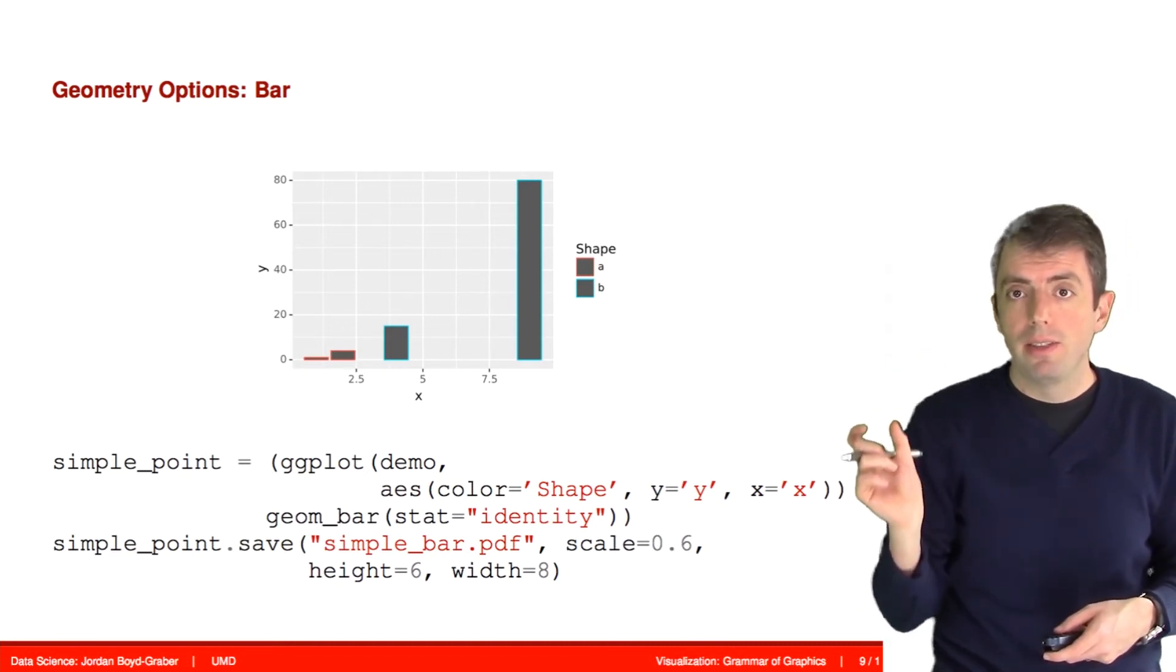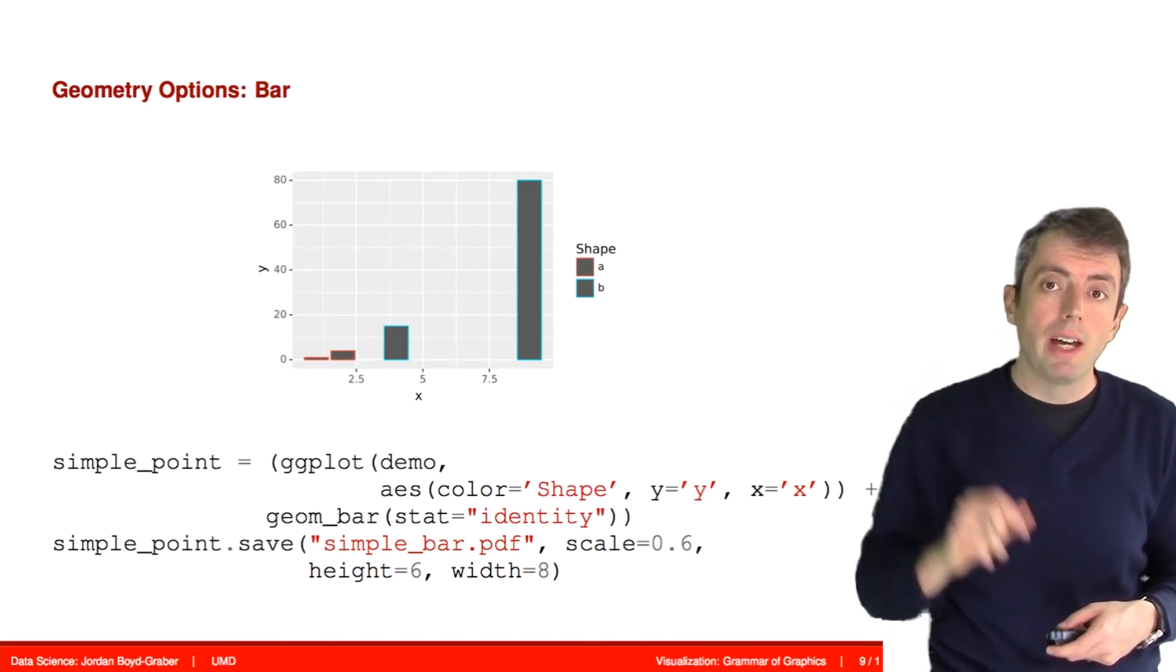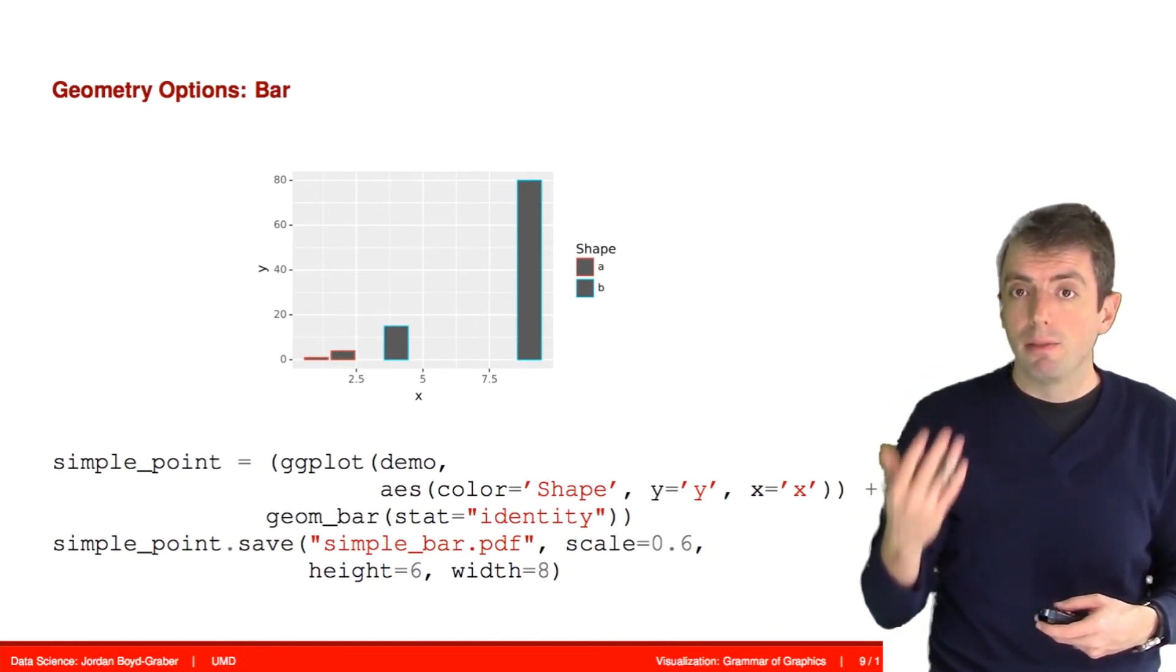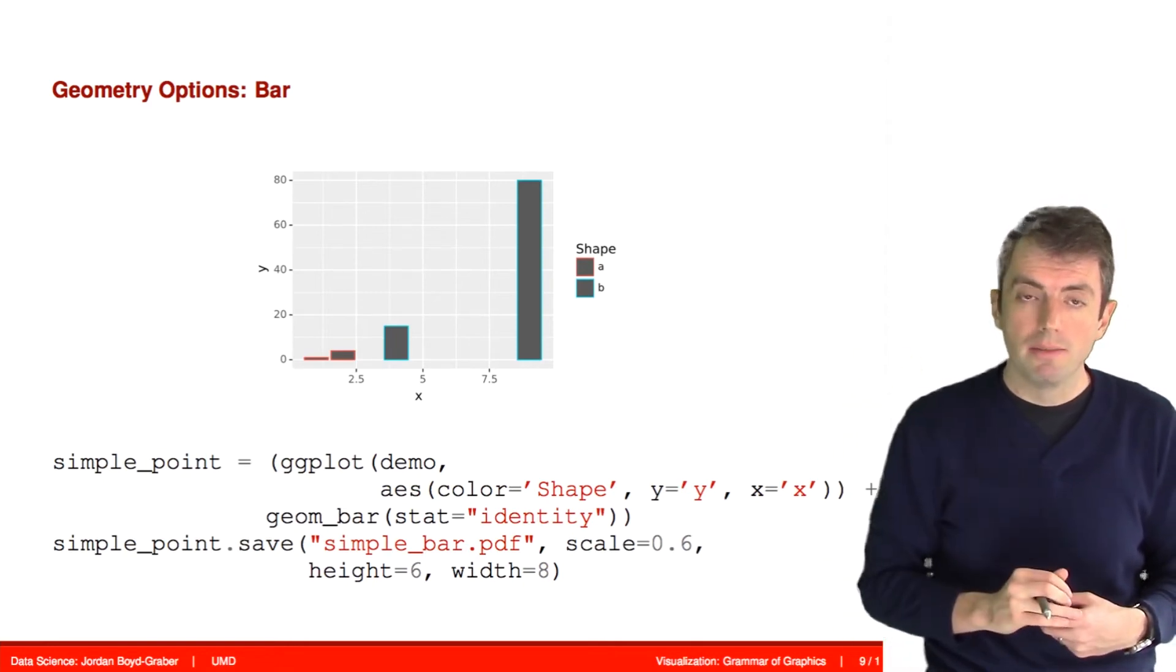But you also need to tell it how tall to make that. Here you're saying just use the value in the y position for how tall that bar is going to be. That's basically saying use the identity function to figure out how tall the bar is going to be.